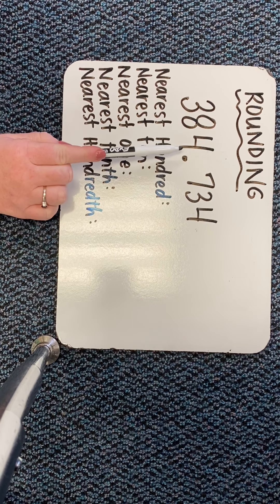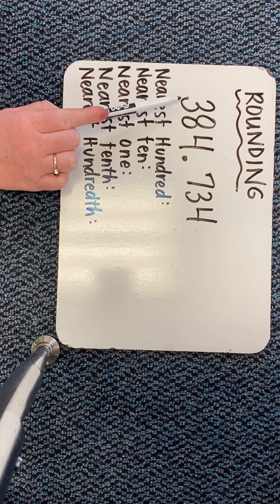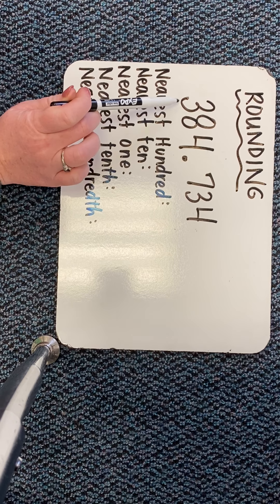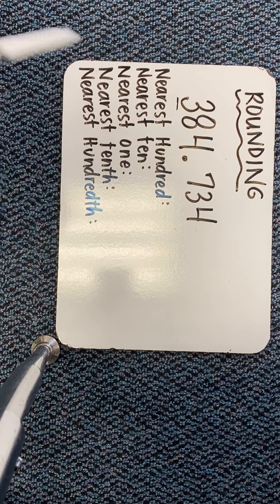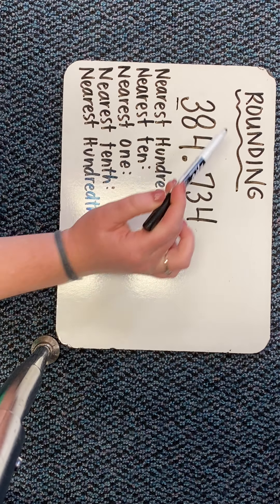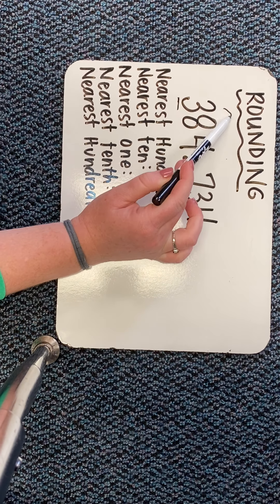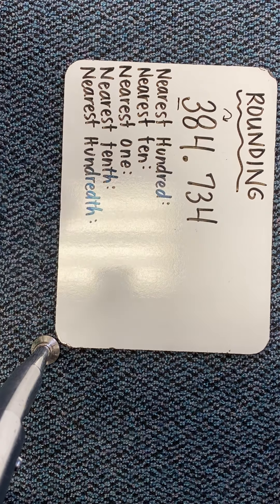I know this would be my ones place, tens place, hundreds place. So I'm going to underline this digit. I'm going to draw an arrow to the right. Is that eight going to bump the three up to a four, or keep it a three?